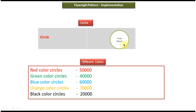So instead of creating 3 lakh circle objects, only one circle object will be created and that circle object will be reused to create multiple circle objects with different colors. In that way I can improve the performance.